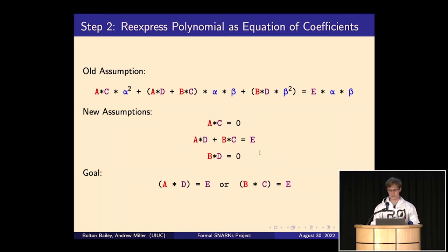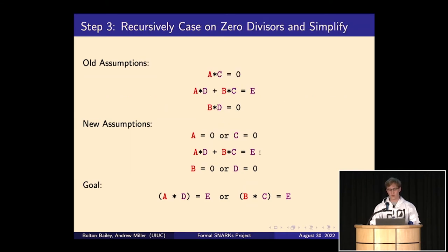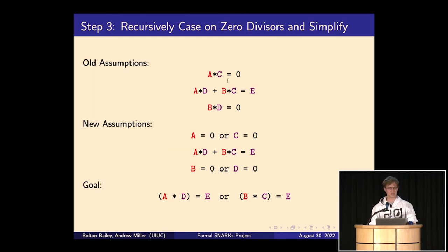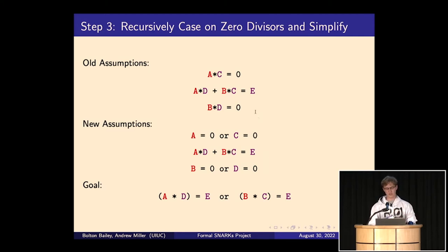Now we can simplify. A, B, C, D, and E are all field elements, and a field has no zero divisors. So if A*C = 0, then either A = 0 or C = 0. This is also true of integers. We can scan each expression to see if it's of the form something times something else equals zero, and if so, split into cases. So A*C = 0 becomes A = 0 or C = 0, and B*D = 0 becomes B = 0 or D = 0.